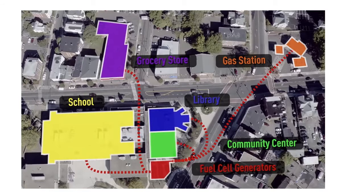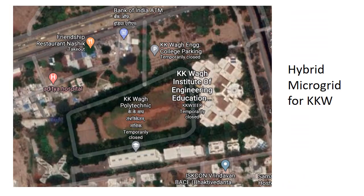Let us discuss campus microgrid. In this photo, the yellow-colored area shows a particular school using fuel cell generators, which provide electricity to the library, school, grocery store, and gas station. If we want to design a microgrid, we need to decide where to place local distributed generators and energy storage devices. For a campus microgrid, we should opt for a hybrid microgrid — not purely DC or purely AC.